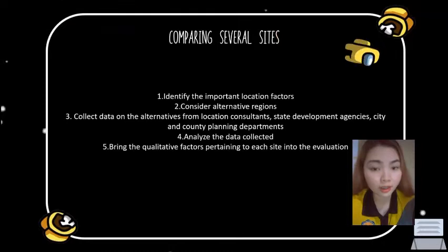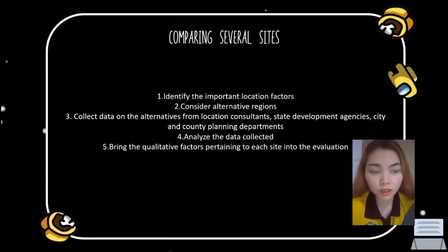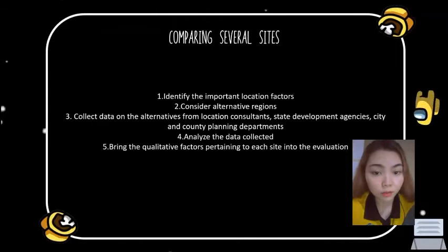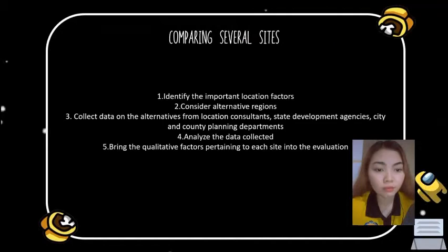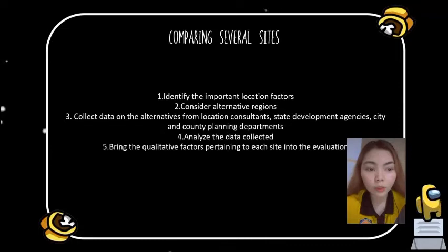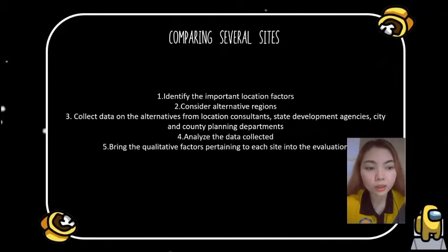Determine the fixed and variable costs associated with each location alternative, then determine which location will have the lowest total cost for the expected level of output, and determine which location will have the highest profit. The fifth step is to bring the qualitative factors pertaining to each site into the evaluation. A qualitative factor is one that cannot be evaluated in dollar terms, such as community attitudes, environmental factors, or quality of life.